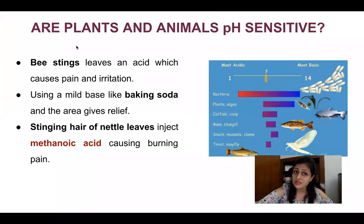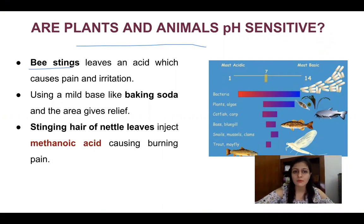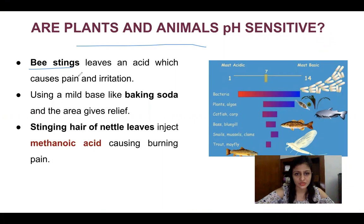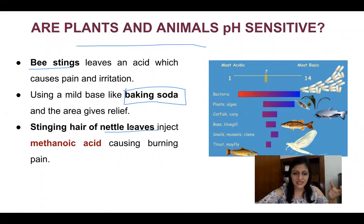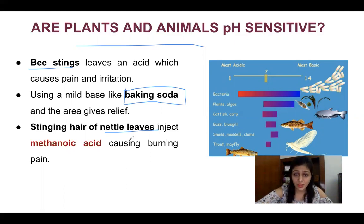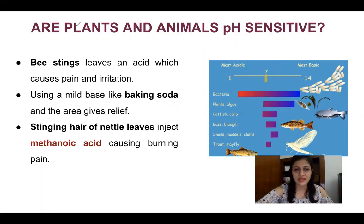Plants and animals are also pH sensitive. For example, when a bee or wasp stings you, they release some acid on the skin, which causes pain and irritation. To treat this, we can apply baking soda, which is a base that neutralizes the acid. There are also nettle leaves whose hairs inject acid, causing a similar reaction. It is all because of the acid — when the pH level is reduced, the acidic condition becomes more harmful.